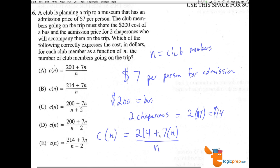Here's the total amount it costs for all the people going. Here's the cost they need to split - the two chaperones and the bus. We're dividing by how many people are going. So B is the correct answer.